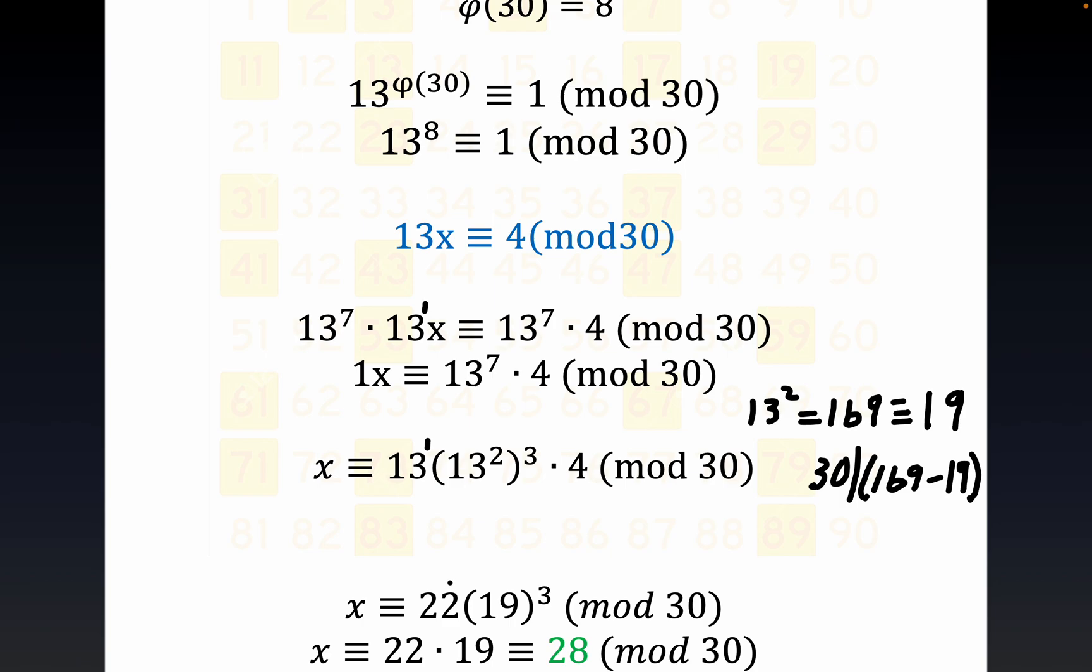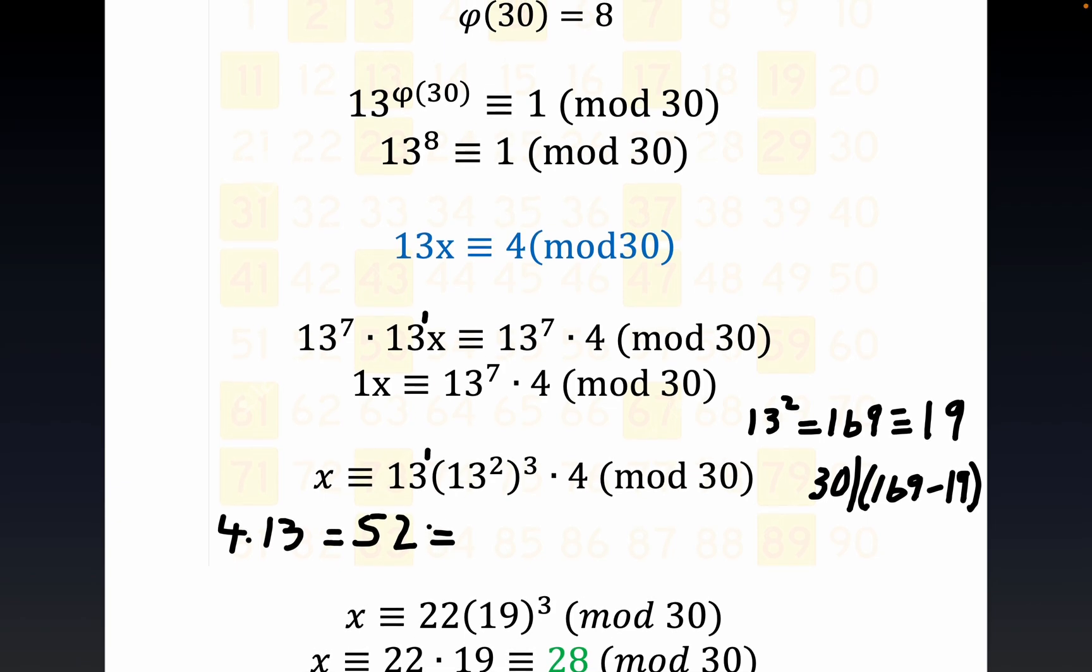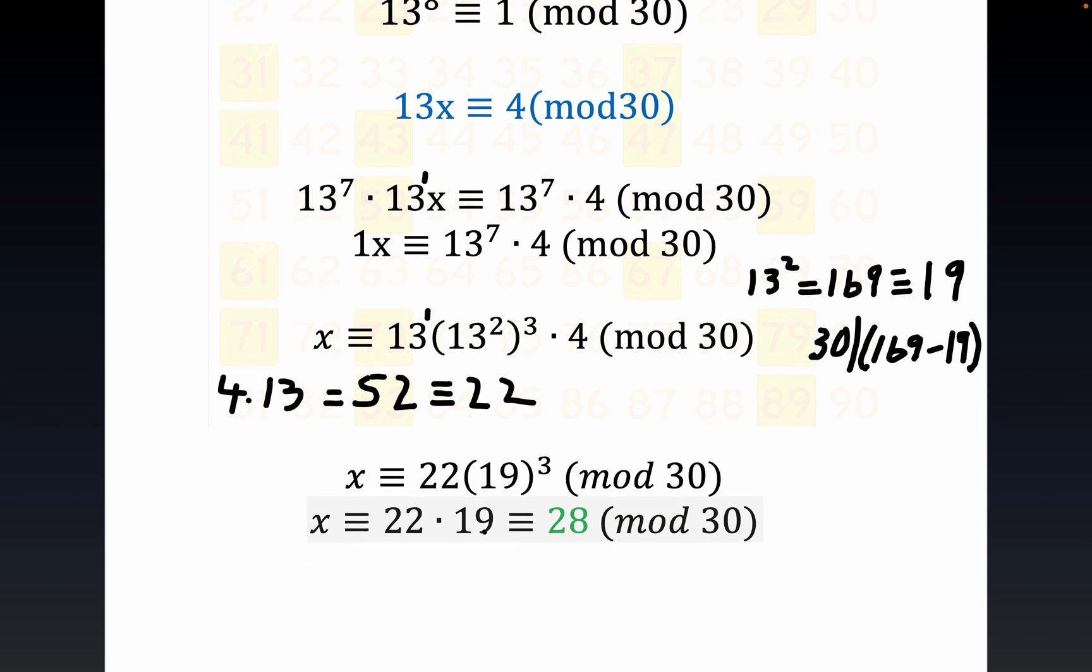Now where in the world did this 22 come from? Well, notice that 4 times 13. We've already accounted for the 13 squared cubed term, right? So we still have the 4 times the 13 here, which is equal to 52. And 52 is congruent to 22 mod 30. 52 minus 22 is 30, right? So that's where this 22, and again it's understood we're doing mod 30. That's where the 22 came from. Now what's happening next? Where in the world do we get this 19?